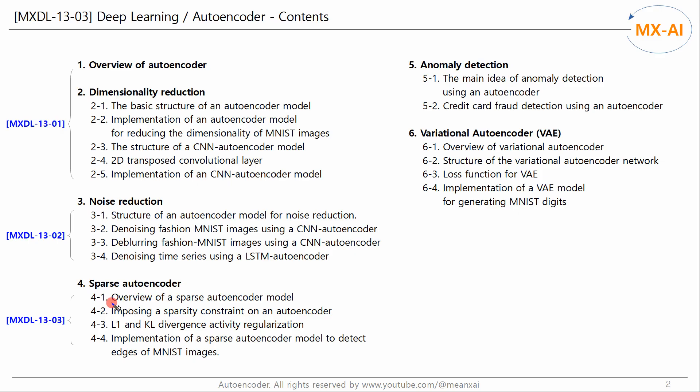First let's take a look at an overview of a sparse autoencoder and how to impose a sparsity constraint on an autoencoder. Next, let's look at the L1 activity regularization and KL divergence regularization for a sparsity constraint. Finally, let's implement a sparse autoencoder model to detect edges of MNIST images.